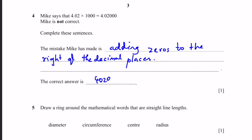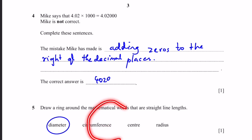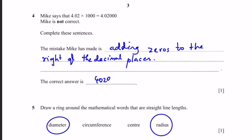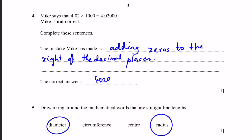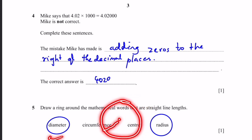Question 5. Draw a ring around the mathematical words that are straight line lengths. Diameter — yes, it's a straight line. Circumference — no, it's not a straight line; it's the perimeter of a circle. Centre — that's not a straight line; it is a point at the centre of the circle. Radius — it is a straight line from the centre to the circumference. Note that the diameter is two times the radius, or a line from one end of the circumference to the other passing through the centre.